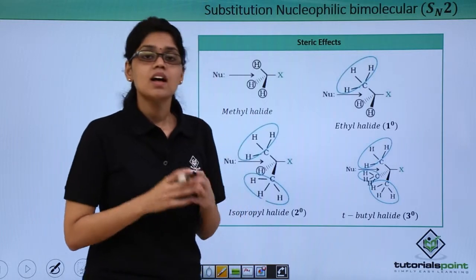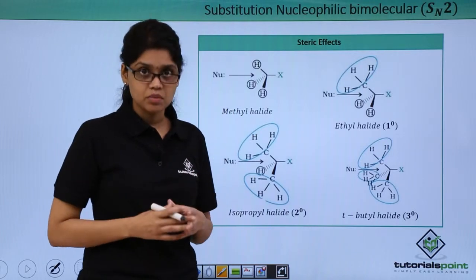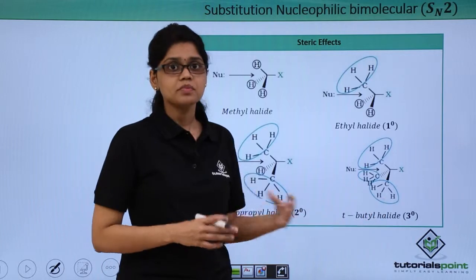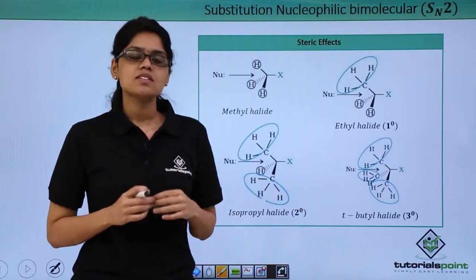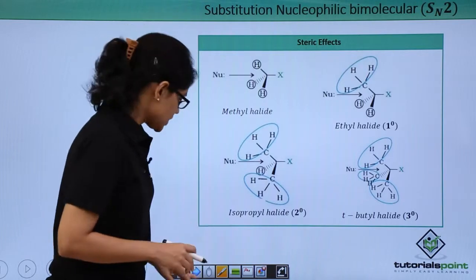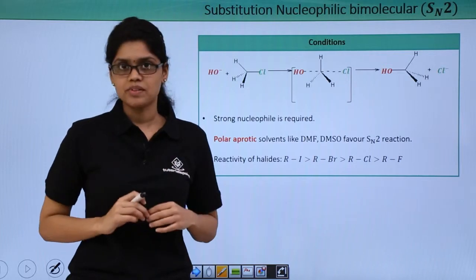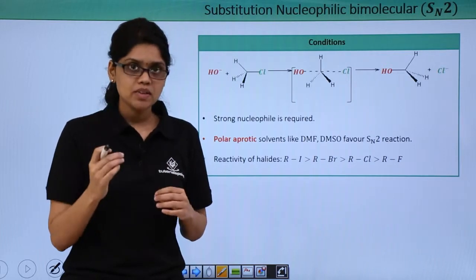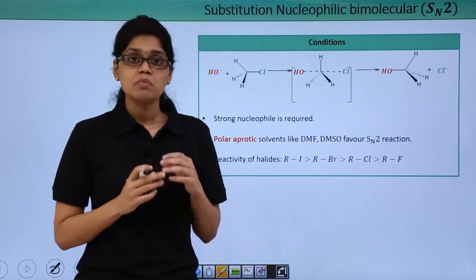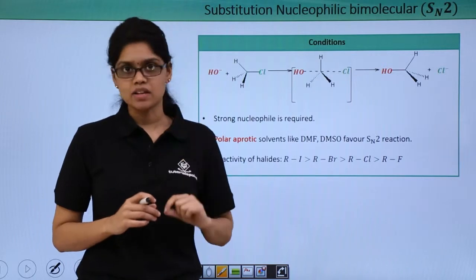For the same reason, the order of reactivity of alkyl halides towards SN2 reaction based on steric effects is primary greater than secondary greater than tertiary. Now, SN2 reaction requires the presence of a very strong nucleophile, in contrast to SN1 where the strength of the nucleophile is completely irrelevant because the rate-determining step essentially depends on the formation of a stable carbocation.